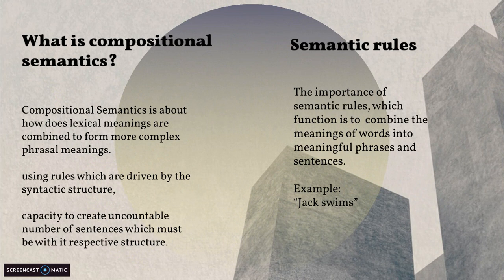According to Fromkin, he references the importance of semantic rules. The function of these rules is to combine the meanings of words into meaningful phrases. We have the example 'Jack swims.' In this example, Jack is a proper name referring to a person, while 'swims' is a verb that composes the sentence. According to the semantic rule, this is correct.